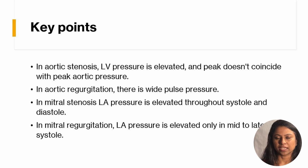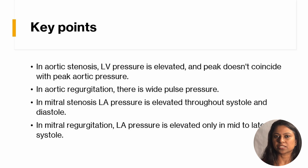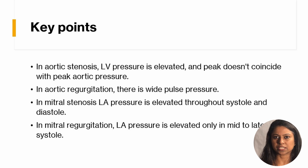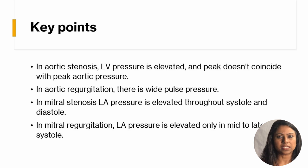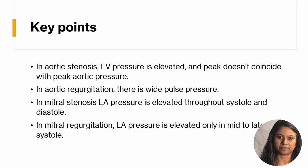Let's summarize the important points. In aortic stenosis, look for a highly elevated left ventricular pressure tracing, which is much higher and no longer in tandem with the aortic pressure tracing. In aortic regurg or insufficiency, there is a wide pulse pressure with a big difference between the peak and trough of the aortic pressure tracing. In mitral stenosis, there is sustained elevation in the left atrial pressure throughout systole and diastole. In mitral regurgitation, the left atrial pressure is elevated only during mid to late systole. Hope this video helps you diagnose valvular heart disorders from the cardiac tracings. Thanks for watching.